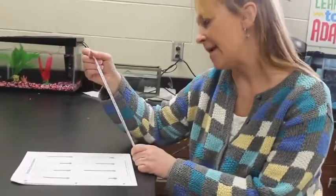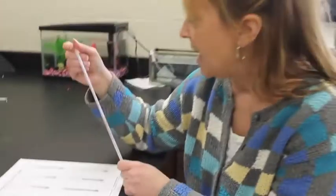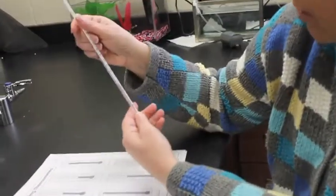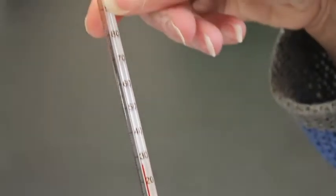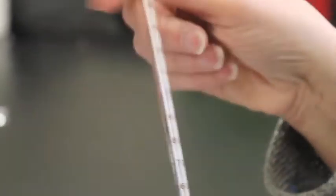This is a big fancy schmancy science thermometer. And you can tell on here, if we look real carefully, it goes from negative 20 all the way up to 50 degrees Celsius. Water's going to boil at 100 degrees Celsius and water's going to freeze at 0 degrees Celsius. So we've got plenty of information right here.